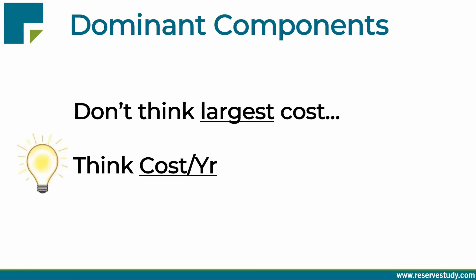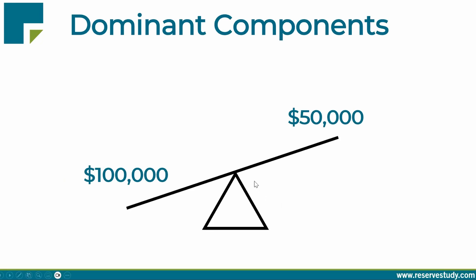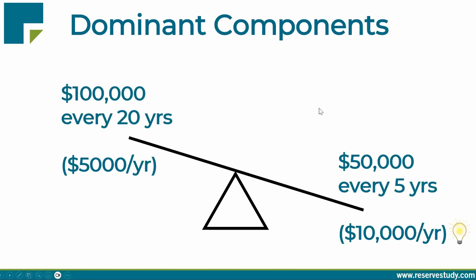Here's a pro tip to identify the influential components from the others: don't just look for the largest cost. What really matters is the cost per year, sometimes called the deterioration rate. For instance, say we have two projects — one at $100,000 and one at $50,000. Clearly $100,000 is twice as expensive, but if that $100,000 project only occurs every 20 years, you're funding $5,000 per year of deterioration. But if a $50,000 painting project needs to occur every five years, it's deteriorating at $10,000 per year — twice as significant. Keep that in mind.